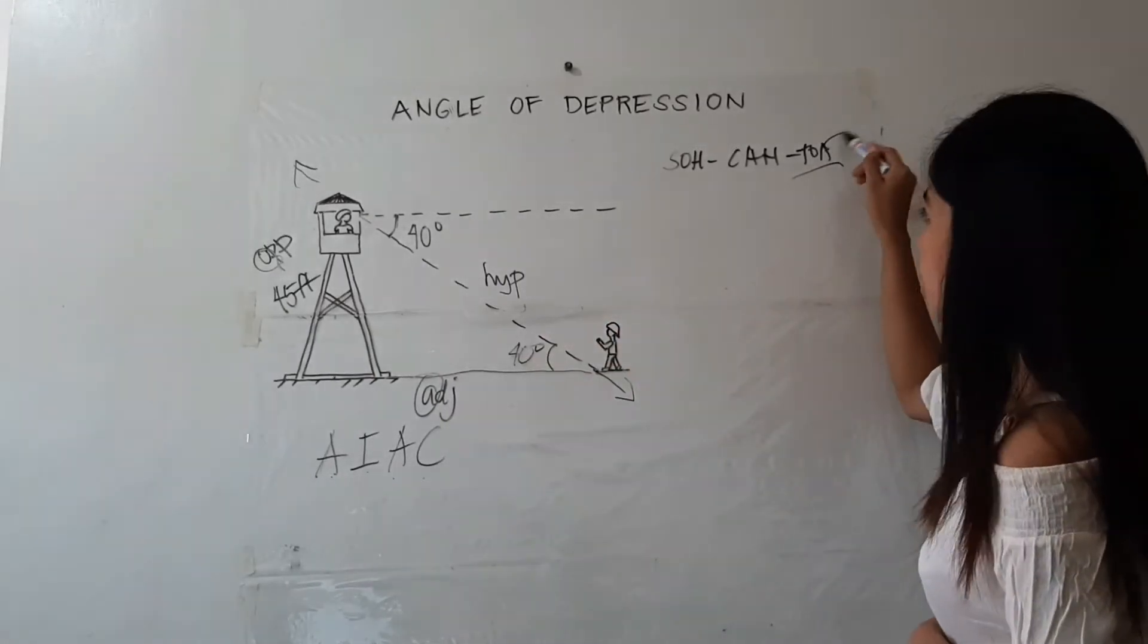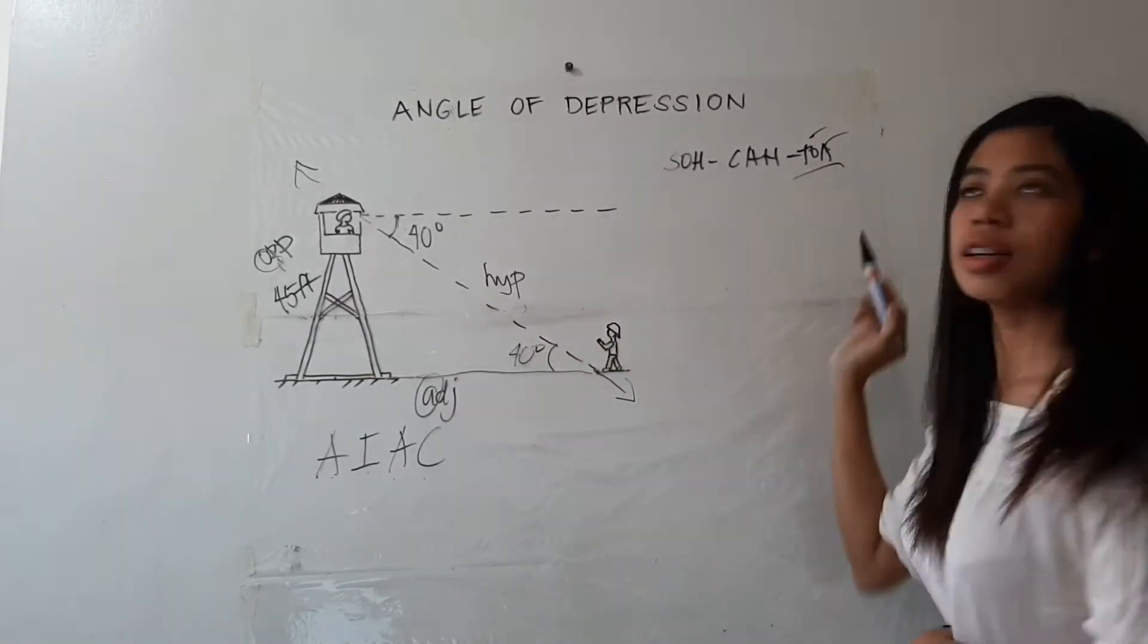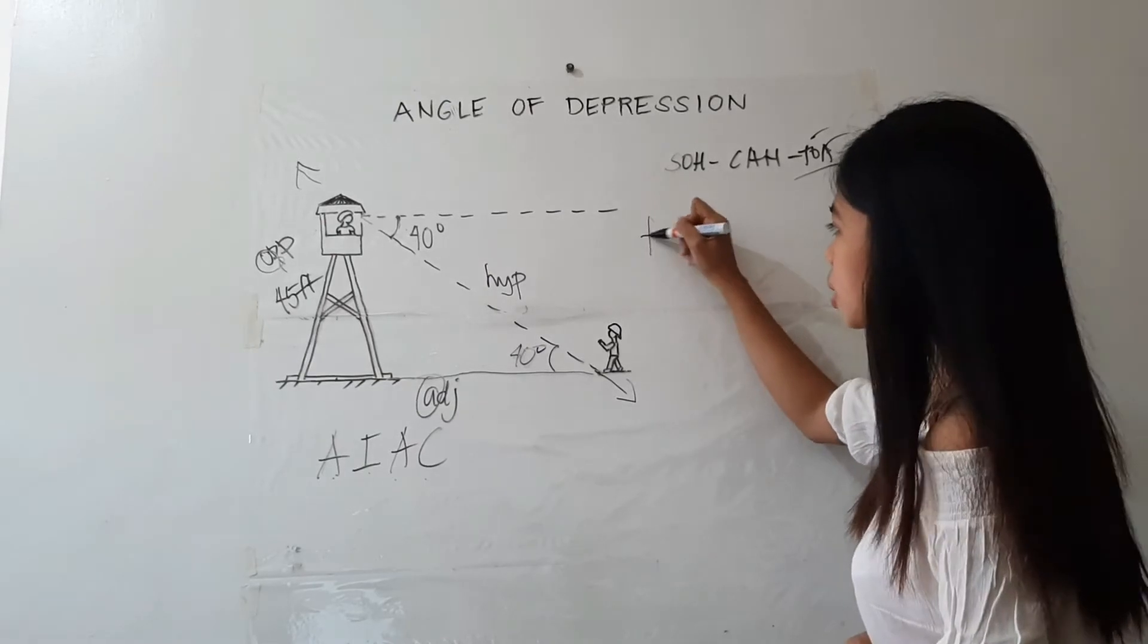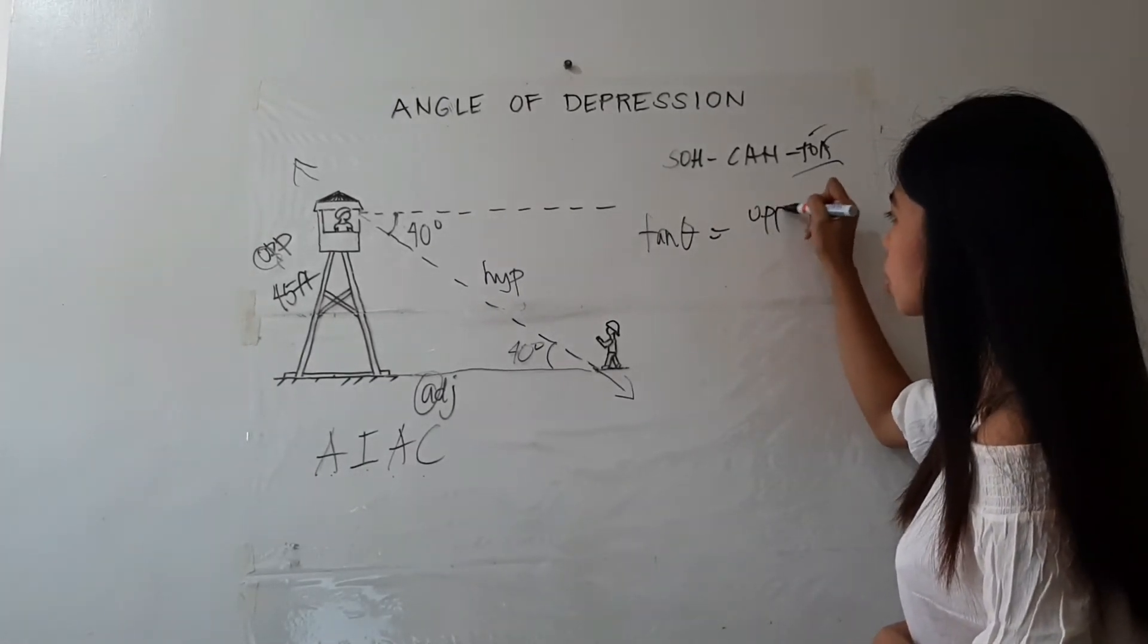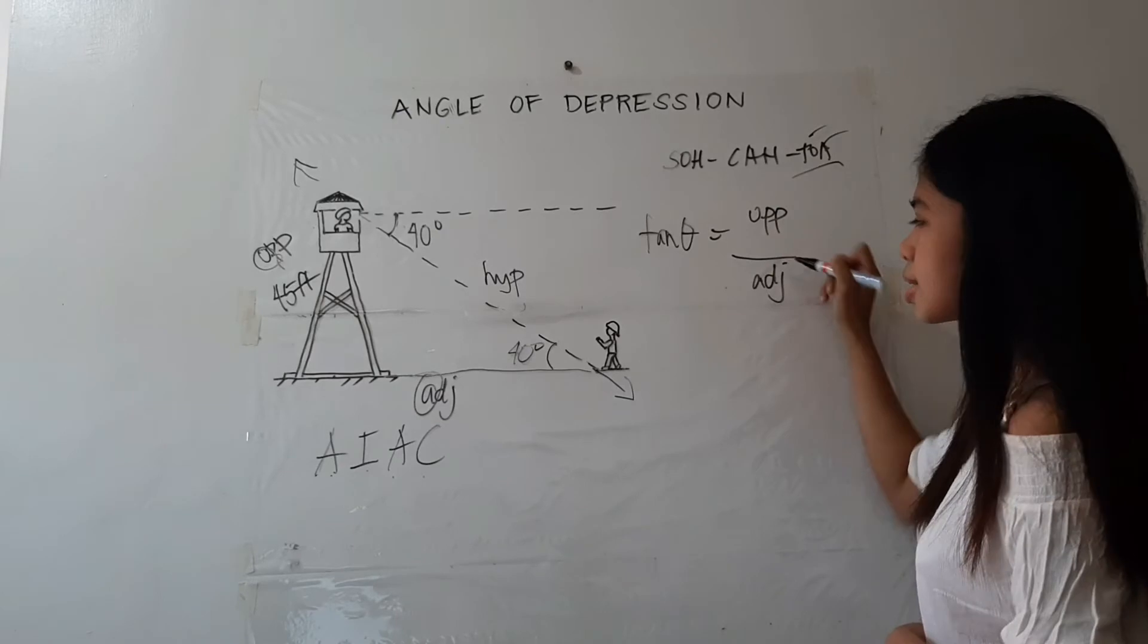So we are looking for A, given the opposite, we are going to use tangent: tangent theta equals opposite over the adjacent side.